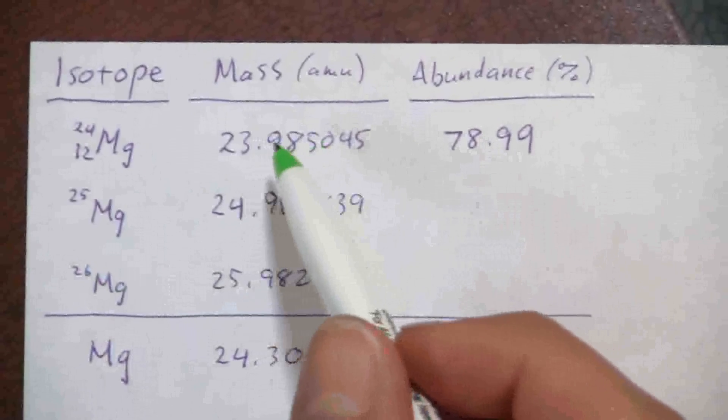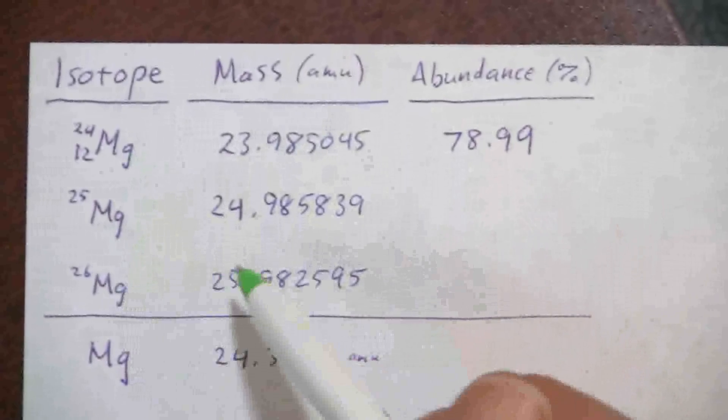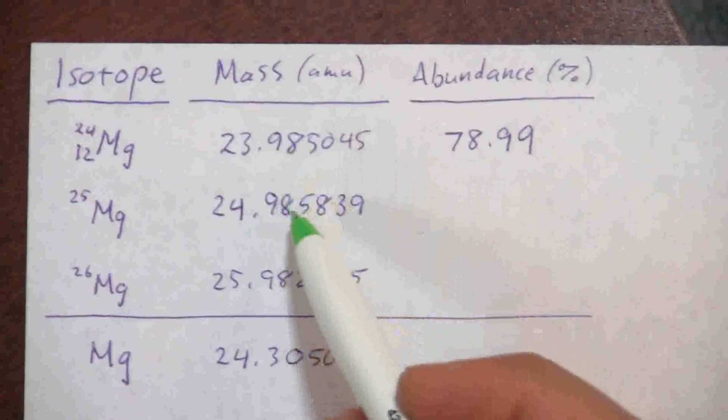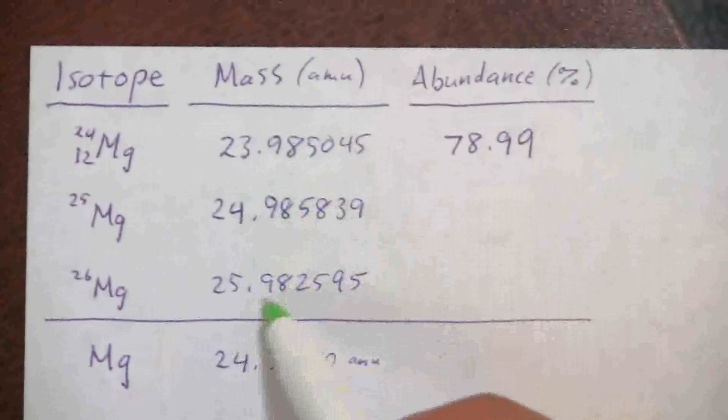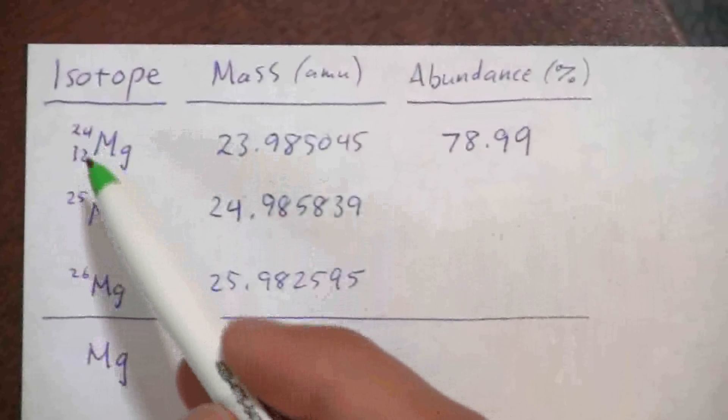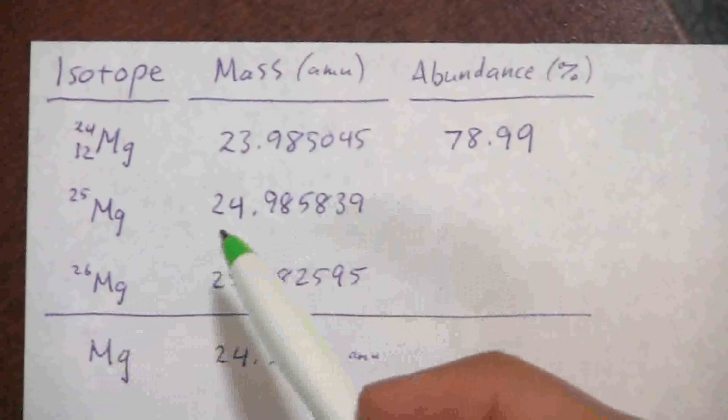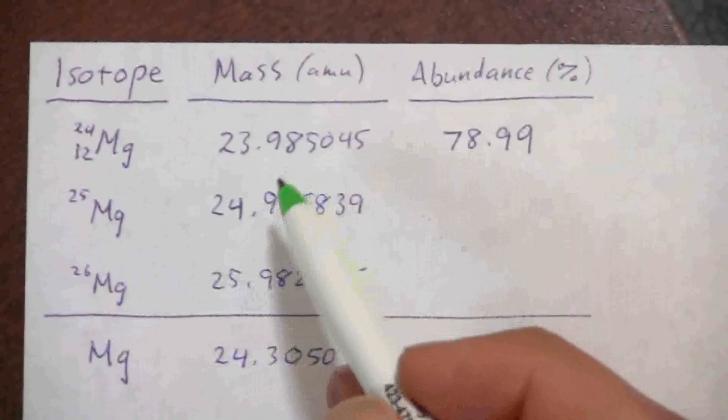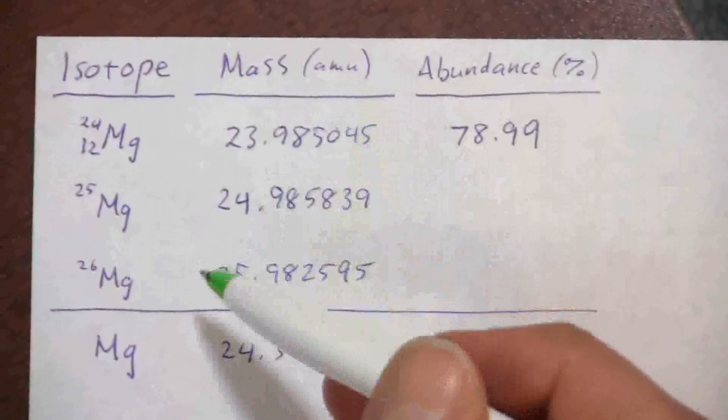And you'll notice the mass in atomic mass units for each of these individual isotopes. You see they are all very close to a whole number, very close to 24, 25, very close to that mass number. The reason is the mass number is the number of protons and neutrons, and each proton and neutron both have a similar mass, very close to one atomic mass unit.